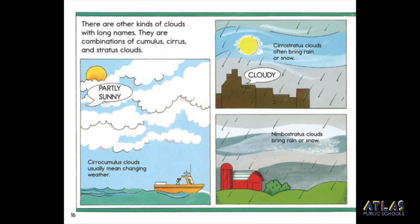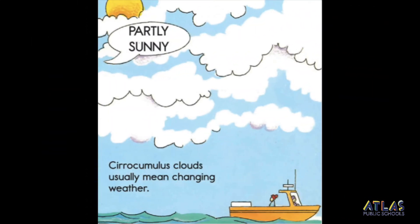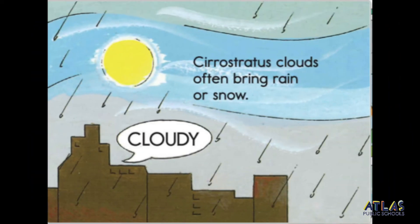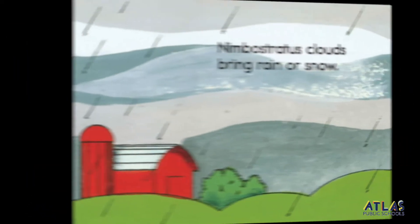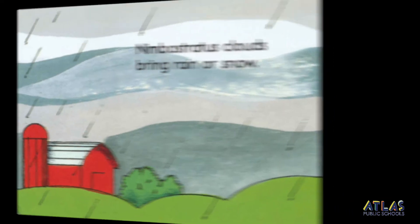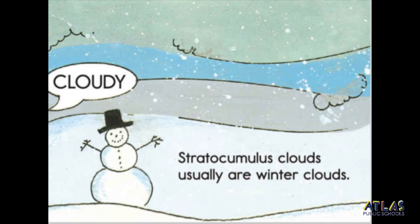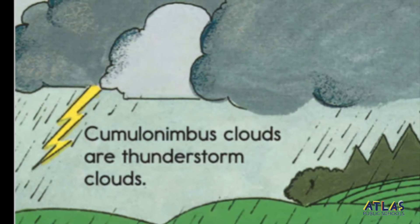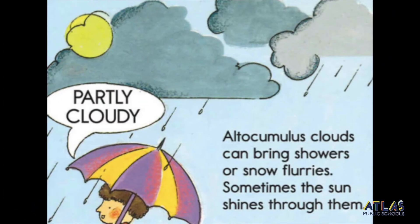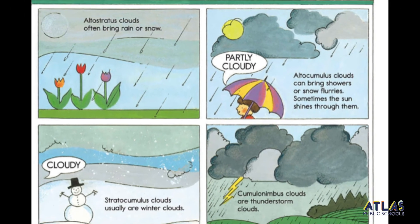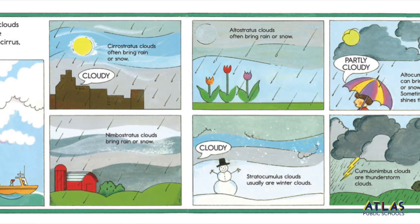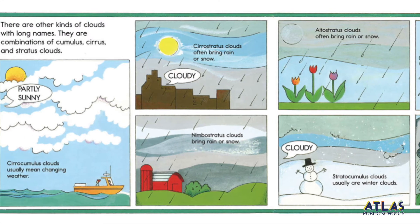There are other kinds of clouds with long names. They are combinations of cumulus, cirrus, and stratus clouds. Cirrocumulus clouds usually mean changing weather. Cirrostratus clouds often bring rain or snow. Nimbostratus clouds bring rain or snow. Altostratus clouds often bring rain or snow. Stratocumulus clouds usually are winter clouds. Cumulonimbus clouds are thunderstorm clouds. Altocumulus clouds can bring showers or snow flurries. Sometimes the sun shines through them. As you can see, there are many different cloud patterns, and cloud patterns can help us determine what the weather is going to be like.